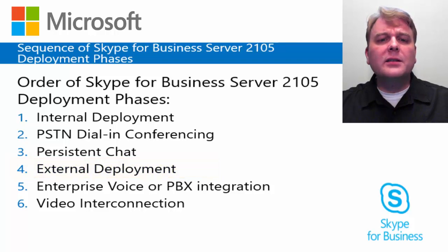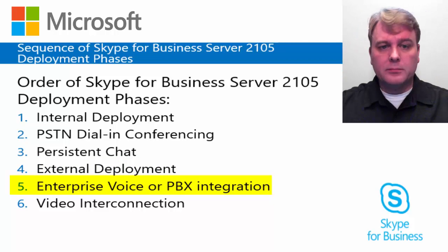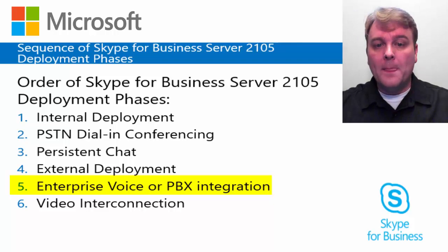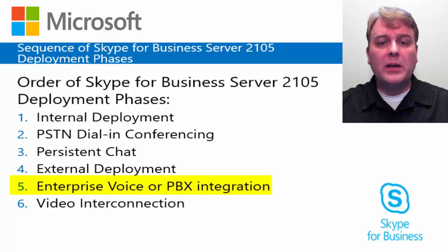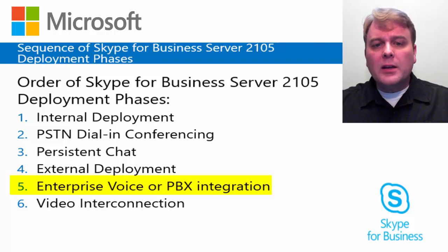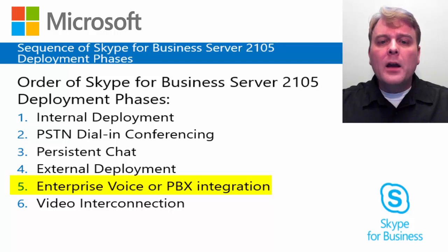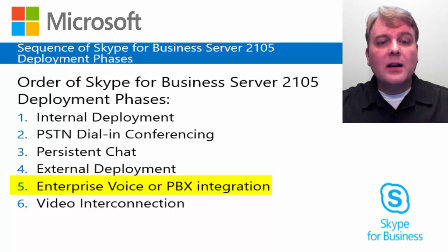Lastly, let's discuss enterprise voice or PBX integration. Implementation of enterprise voice or PBX integration can be complex depending on your choice of integration method. The simplest method is by using a qualified SIP to PSTN gateway or SIP trunking. In all voice deployments, but especially when implementing direct SIP and call via work, possessing knowledge of SIP is a great advantage because you can debug and troubleshoot any issues during integration. Enterprise voice deployment usually includes dial-in conferencing if it has not already been deployed.